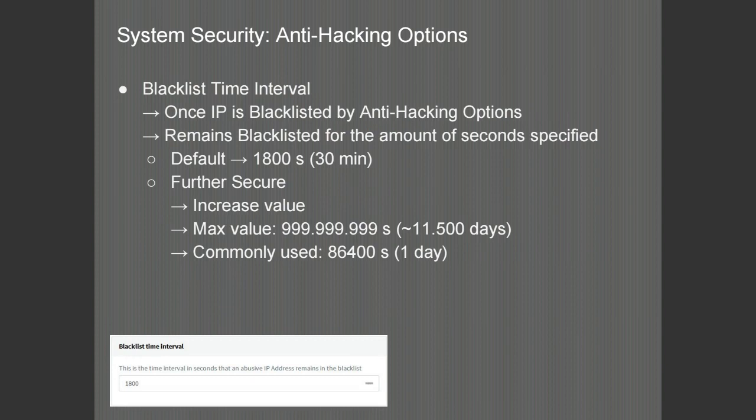The blacklist time interval is the amount of time an IP address will be blacklisted and unable to communicate with the PBX. By default it is 1,800 seconds — that is 30 minutes. You can increase the security by raising the value to a maximum of 1 billion seconds minus 1, which is approximately 11,500 days or about 31 years. A commonly used value is 86,400 seconds — one day, 24 hours — which gives ample time for the admin to investigate any attacks on the PBX.